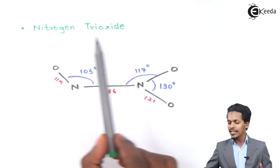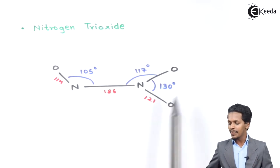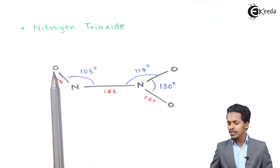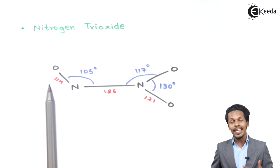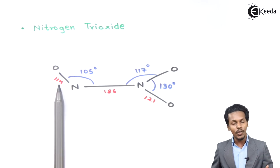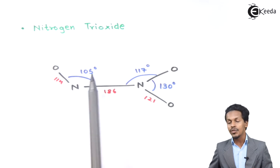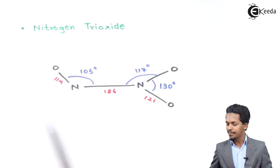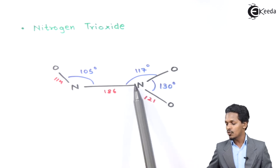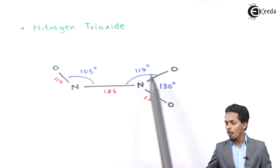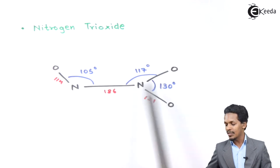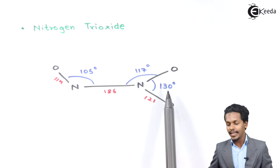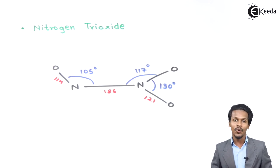The next is Nitrogen Trioxide, with chemical formula N₂O₃. The Oxygen atom is attached to a Nitrogen atom with a bond length of 114 picometers, making a bond angle of 105 degrees for the O–N–N arrangement. The second Nitrogen is attached to two other Oxygen atoms, making a bond angle of 117 degrees with N–N–O, and 130 degrees for O–N–O, with a bond length of 121 picometers.